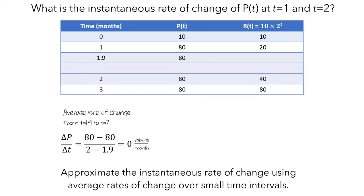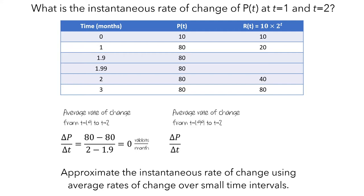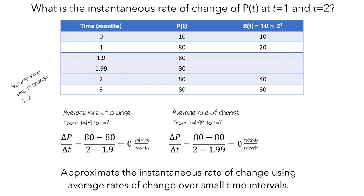We can zoom in even further to the interval starting at t equals 1.99 months. Since the babies were all born at t equals 1, there were 80 rabbits at t equals 1.99 months. The average rate of change from t equals 1.99 to t equals 2 months is the change in rabbits — 80 minus 80 — divided by the change in time — 2 minus 1.99 — which again results in 0 rabbits per month. We now have two approximations of the instantaneous rate of change, both equal to 0 rabbits per month, suggesting the instantaneous rate of change at t equals 2 months is also 0 rabbits per month.